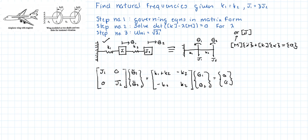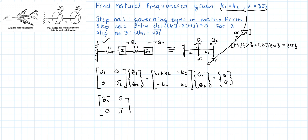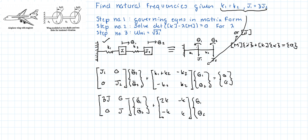We're going to use the information from the problem statement to simplify. Substituting J1 = 3J and J2 = J, and K1 = K2 = K, the inertia matrix becomes [3J, 0; 0, J] and the stiffness matrix becomes [2K, -K; -K, K]. That completes step one.